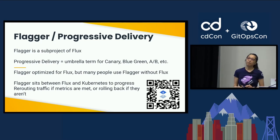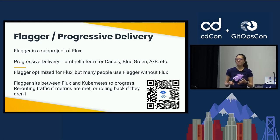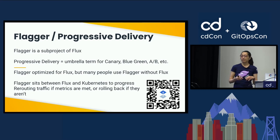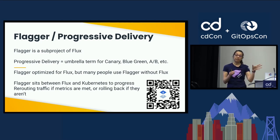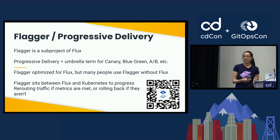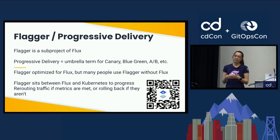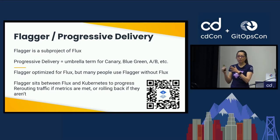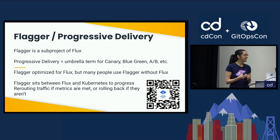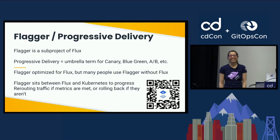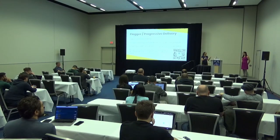Progressive delivery is a fairly new umbrella term for canary, A/B, and blue-green deployments. Within Flux is a subproject called Flagger that provides this — it doesn't require Flux but is optimized for it. Flagger sits between Flux and Kubernetes such that when Flux notices a change in the manifest, Flagger can intercept and say, let's redirect traffic slowly and take metrics from things like Prometheus or Datadog to make sure the deployment is successful based on your thresholds — 10%, another 10% — until you complete it. And if something's awry, you can roll it back. This would have made my life a lot easier, as opposed to manually switching over 10 or 20% of traffic at a time doing one Git commit at a time.